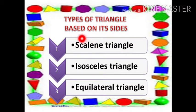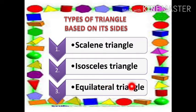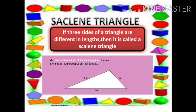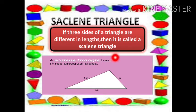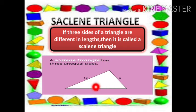Now let's see the types of triangle based on its sides: Scalene triangle, Isosceles triangle, Equilateral triangle. A Scalene triangle is one where all three sides are different in length. For example, sides of 13, 9 and 14 are all different, so it is called a Scalene triangle.